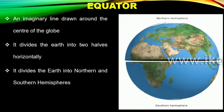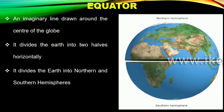Students, in this unit, we will discuss the mapping skills and the terminologies used while reading the globe. Number 1 is Equator. Equator is an imaginary line drawn around the center of the globe. It divides the Earth into two halves horizontally — into Northern and Southern Hemispheres. The Northern Hemisphere is situated between the Equator and the North Pole, and the Southern Hemisphere is situated between the Equator and the South Pole.